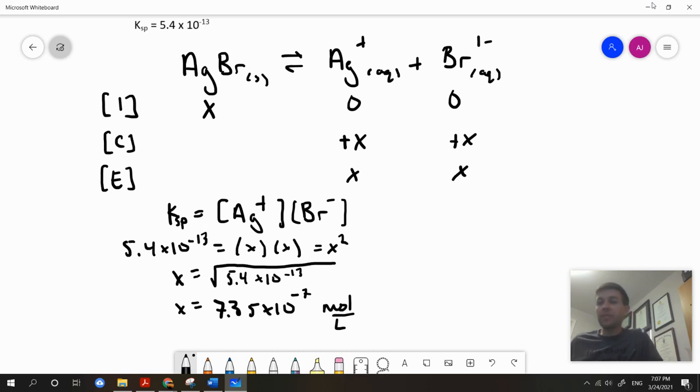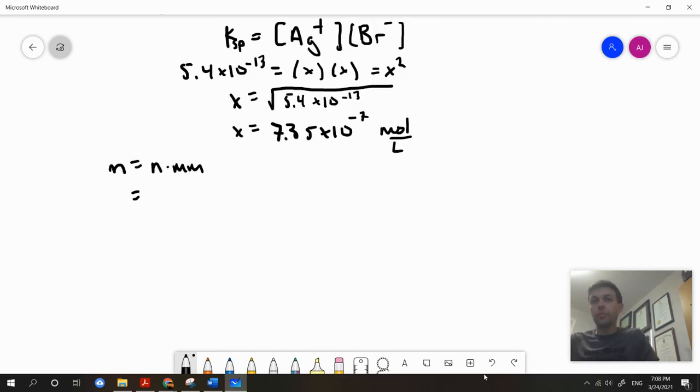What we need to do now is convert this into a mass which can be dissolved in 100 milliliters of water. I'm going to deal with this concentration conversion by treating the numerator and the denominator separately.